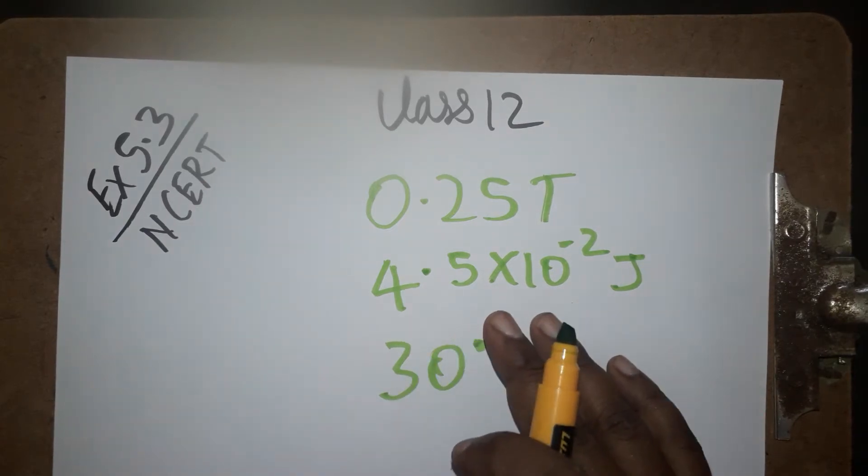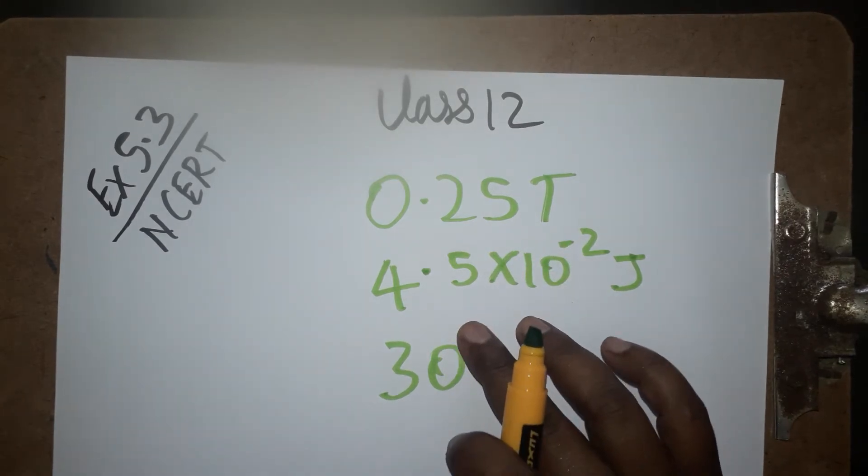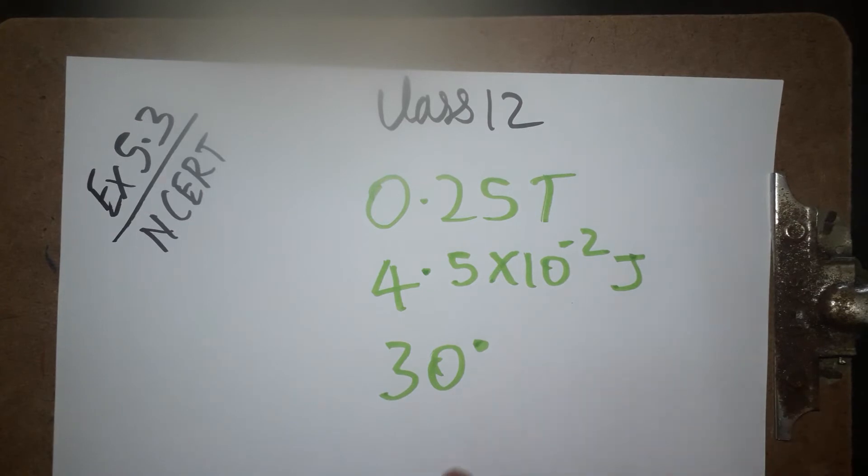Now we are going to see the 3rd problem. First we will see what data is given: 0.25 tesla, 4.5×10⁻² joules, and theta equals 30 degrees.